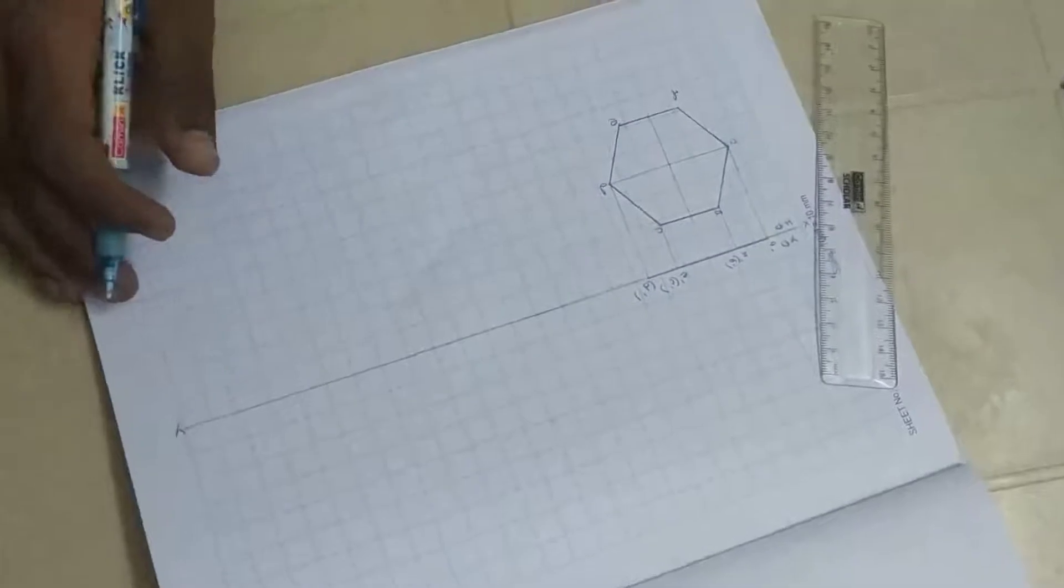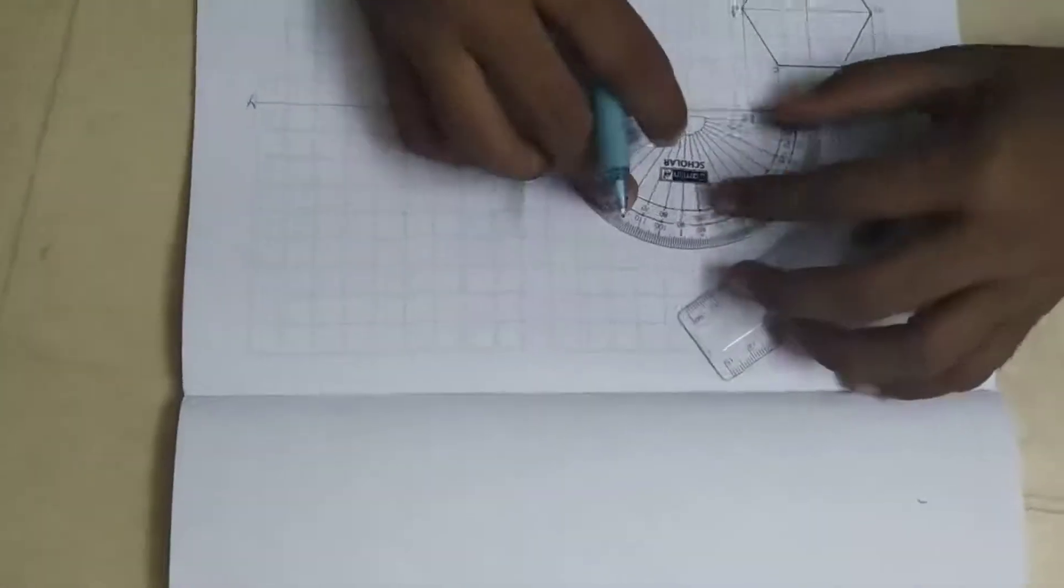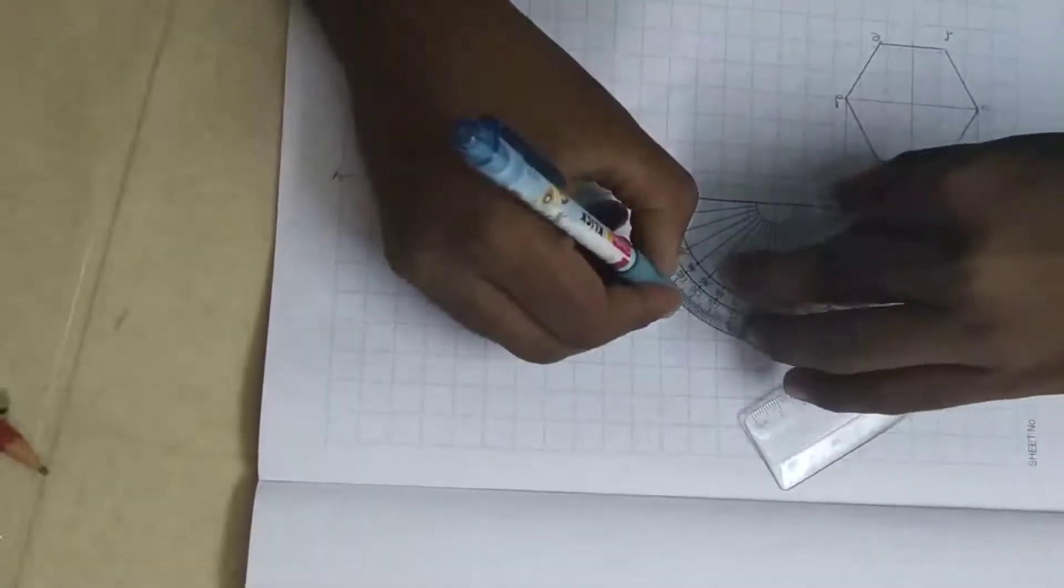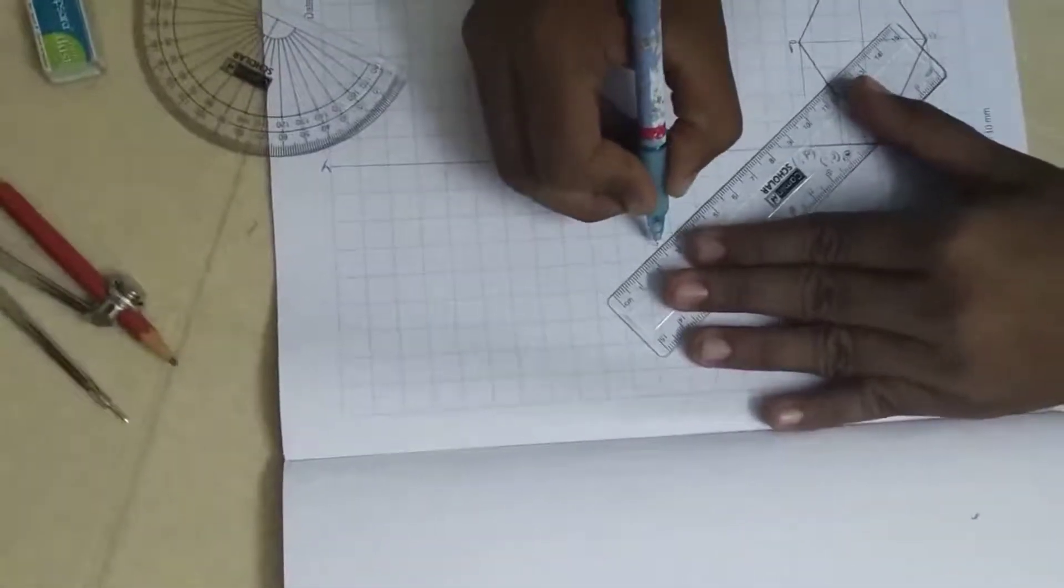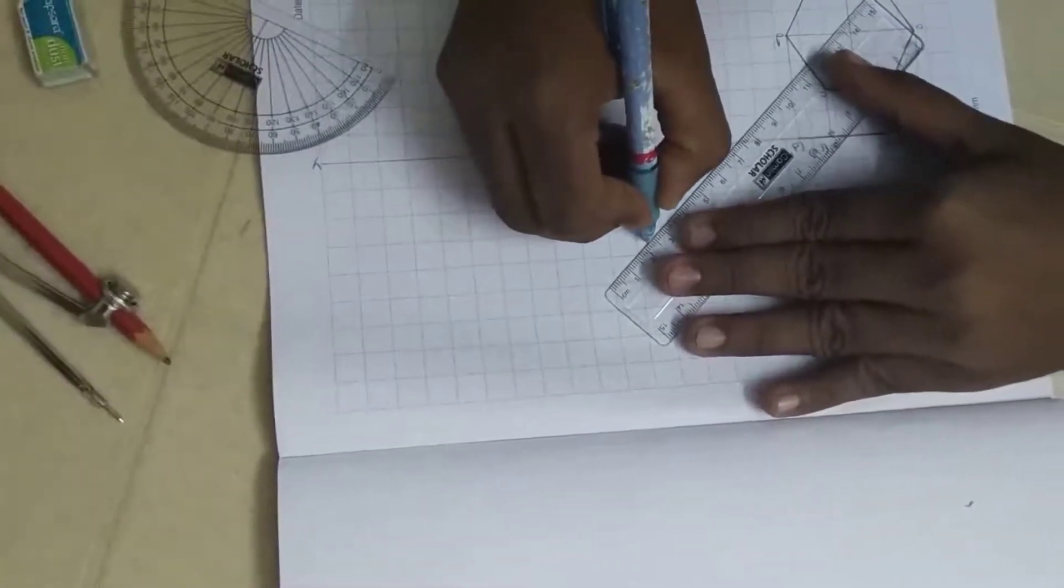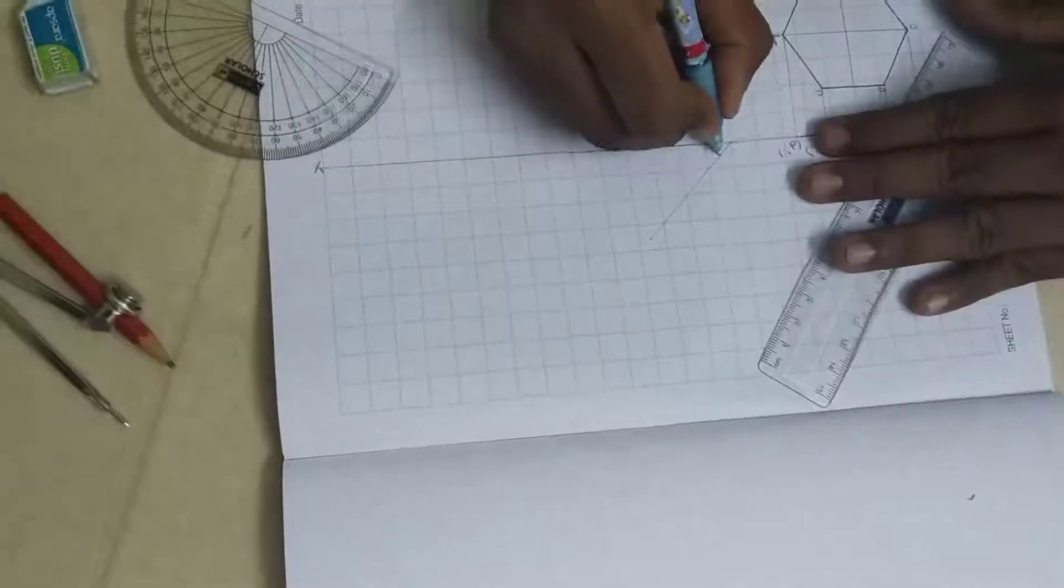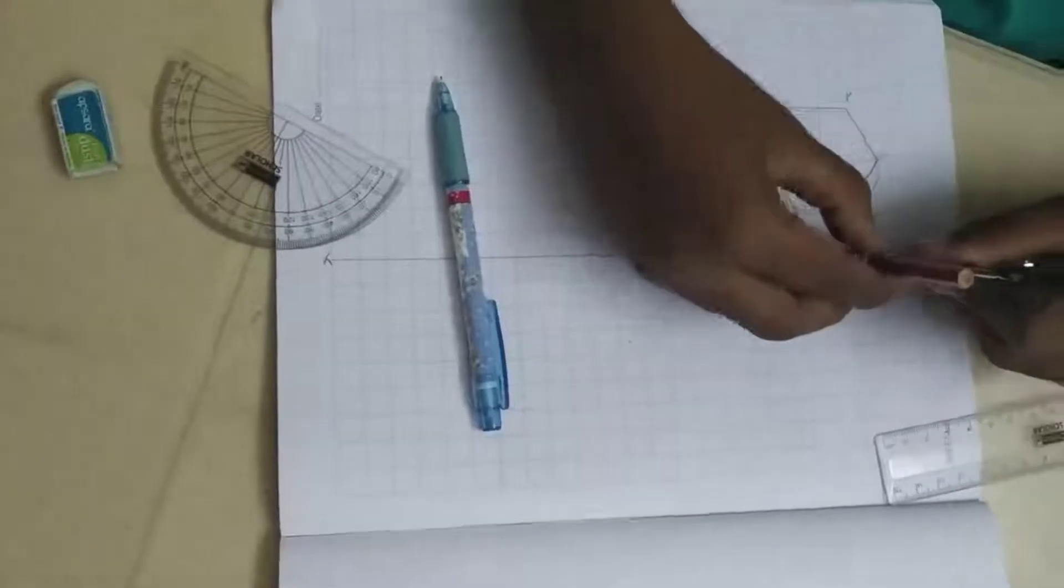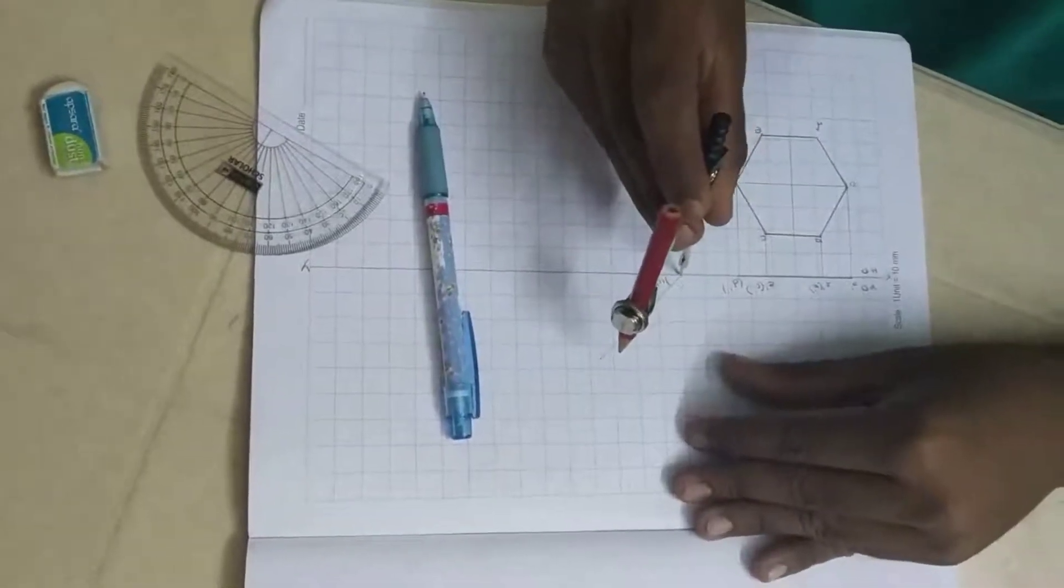And I am given that the lamina makes 45 degrees to HP. So take 45 degrees, take protractor and measure 45 degrees. And this is 45 degrees. Now take compass and measure from A dash to D dash. Cut an arc from here.